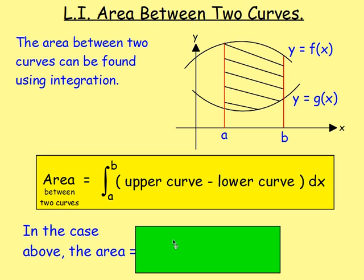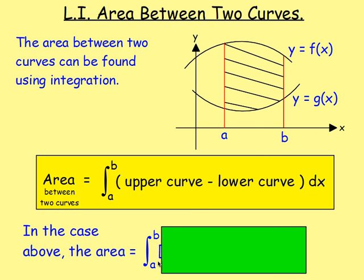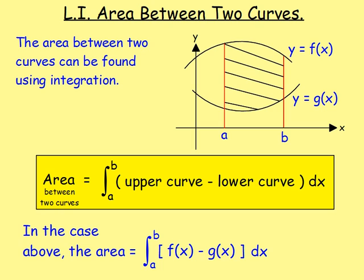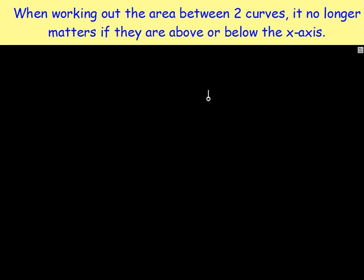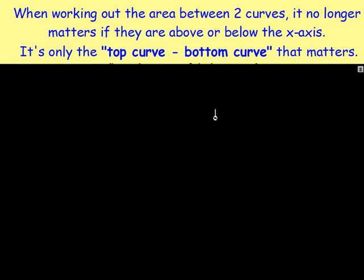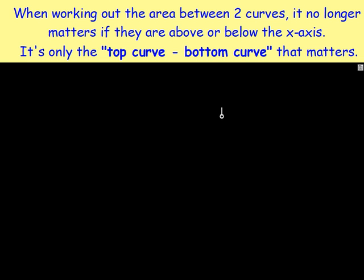In the case shown, the area would be equal to the integral between A and B — A is the lower limit, B is the upper limit — of f of x minus g of x, then integrate using your limits. When working out the two areas, it no longer matters if they are above or below the x-axis. All that matters is that you remember to do the top curve minus the bottom curve.